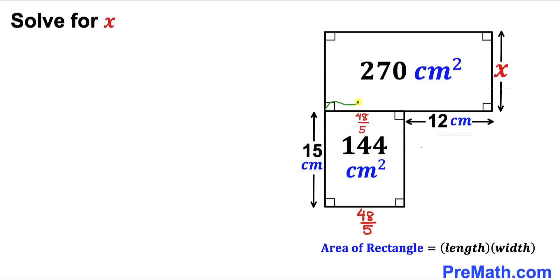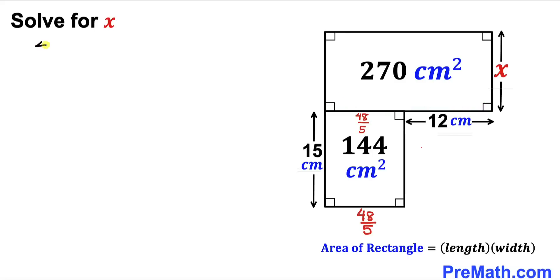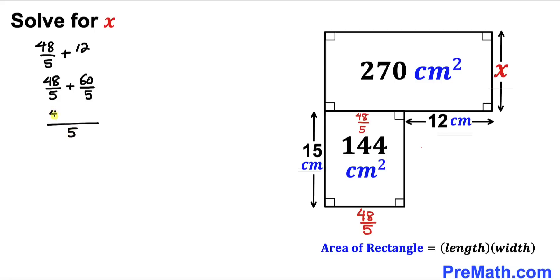Now we know one side is 48/5 and another side is 12, so the total combined side length is 48/5 plus 12. Writing 12 as 60/5 to get a common denominator of 5, we add 48 plus 60 to get 108/5. So the total side length is 108/5 centimeters.